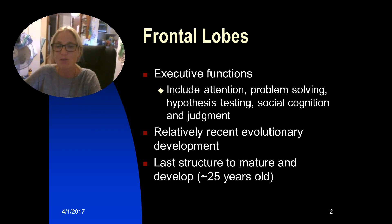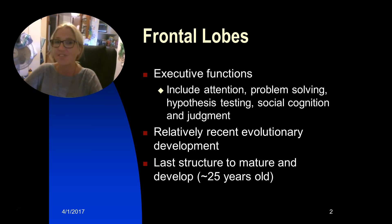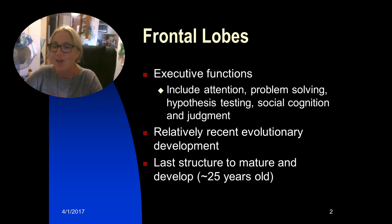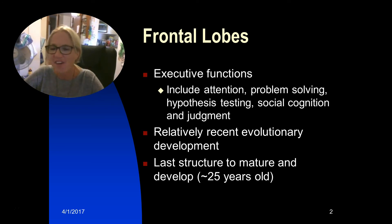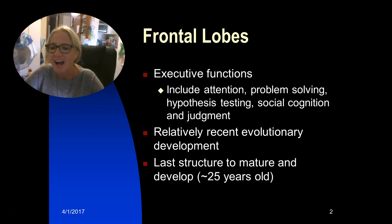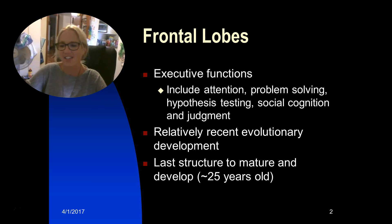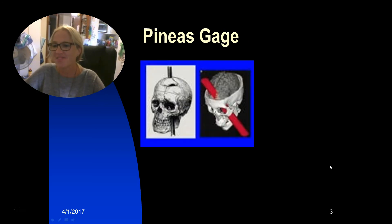The frontal lobe is also the last part of the brain to mature and develop — this shouldn't come as a surprise for those with teenage children. Their brains are still a work in progress and the frontal lobe can keep developing up until about 25 years of age. So when your 18-year-old is doing silly things and not demonstrating sound consequential thinking or judgment, they're still developing that very part of the brain that allows insight, judgment, and higher executive function.